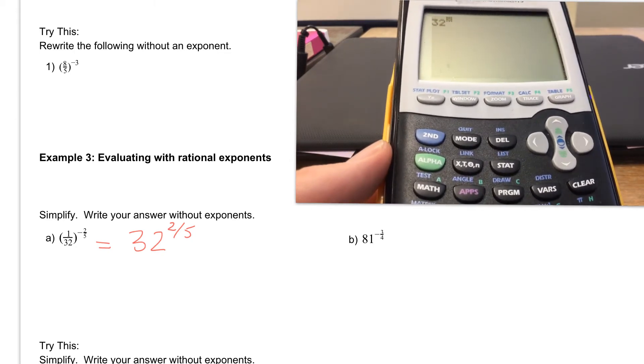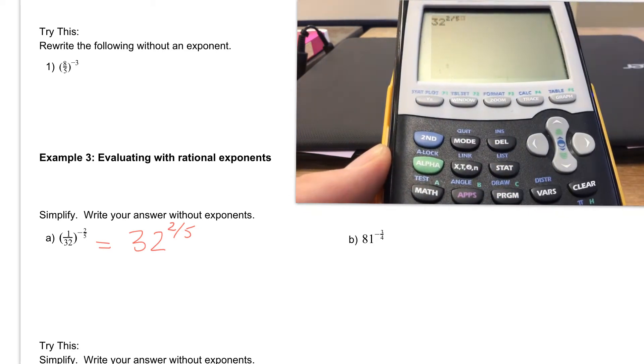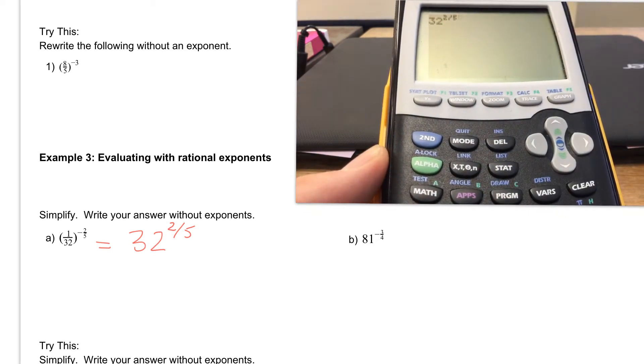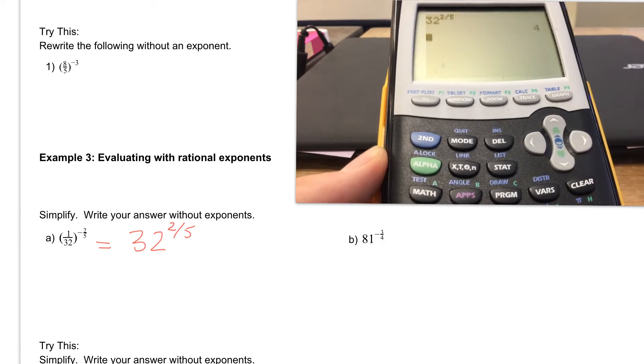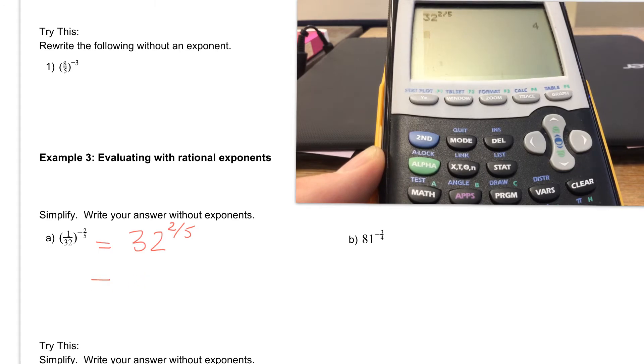And then we want to type in 2 fifths, so we're going to do 2 divided by 5. And then we can go ahead and hit enter, and we get 4. So we know that this is equal to 4.